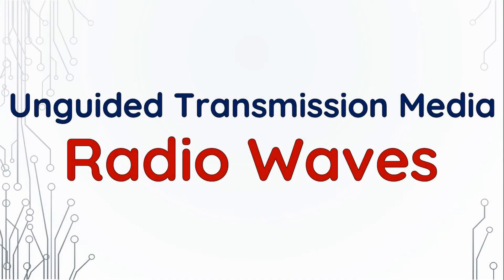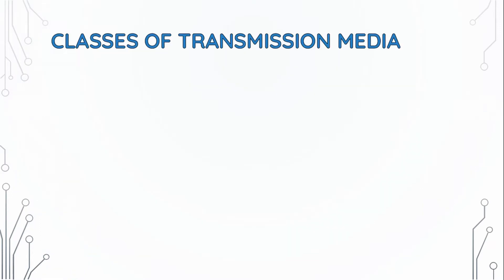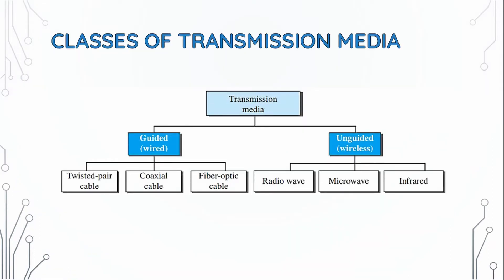In today's session, we will talk about radio waves and microwaves. Classes of transmission media are two: guided by wired and unguided by wireless. Guided wired media are three: twisted pair cable, coaxial cable, and fiber optic cable.